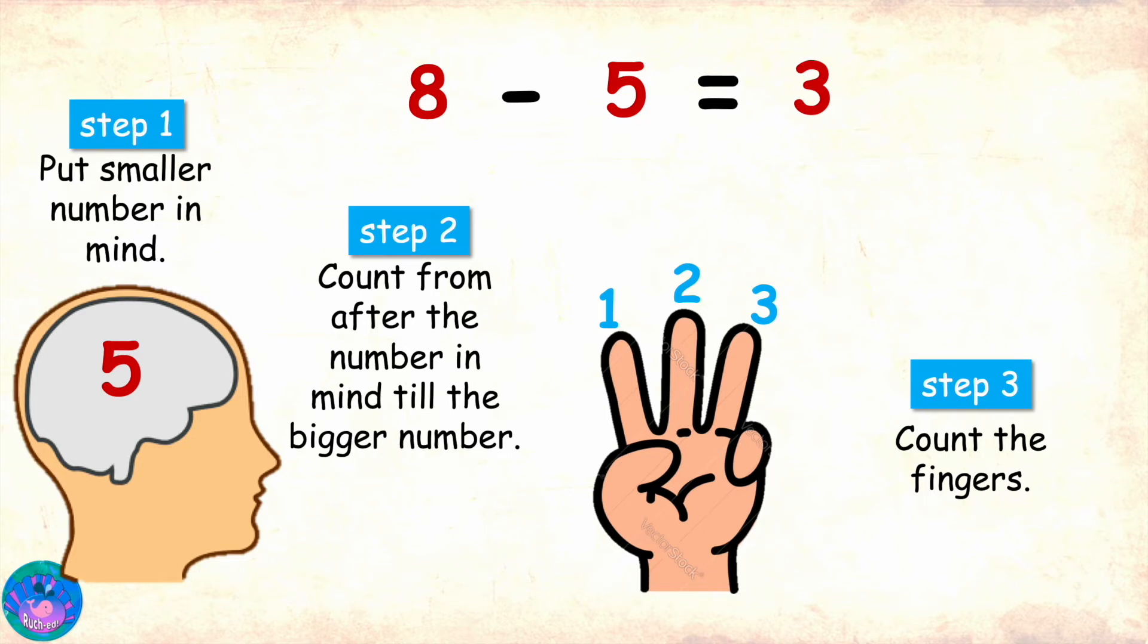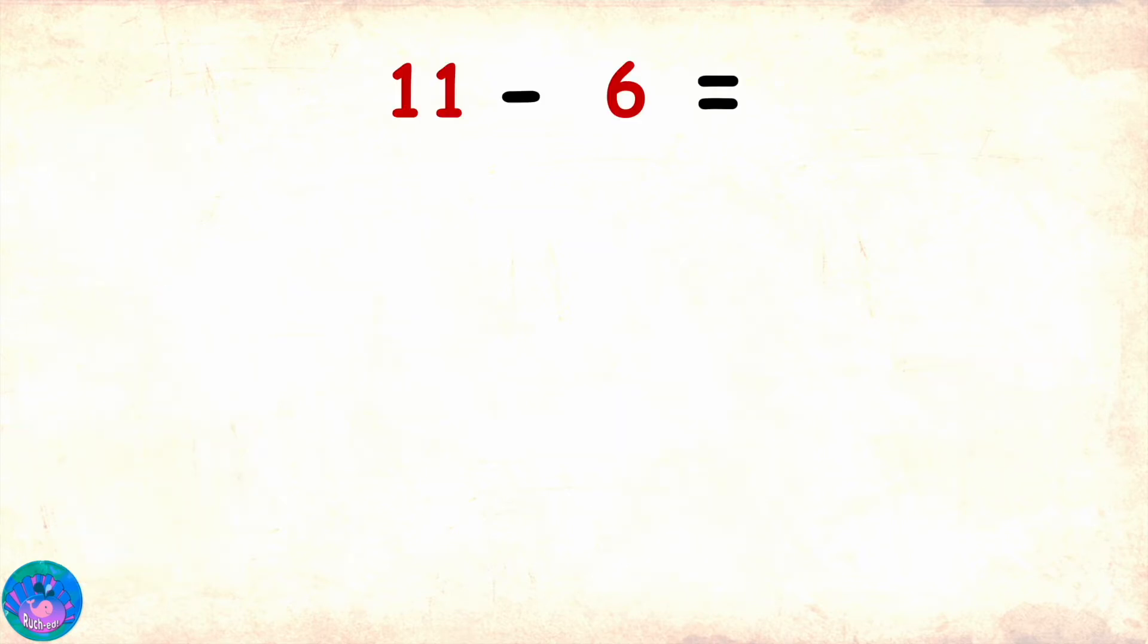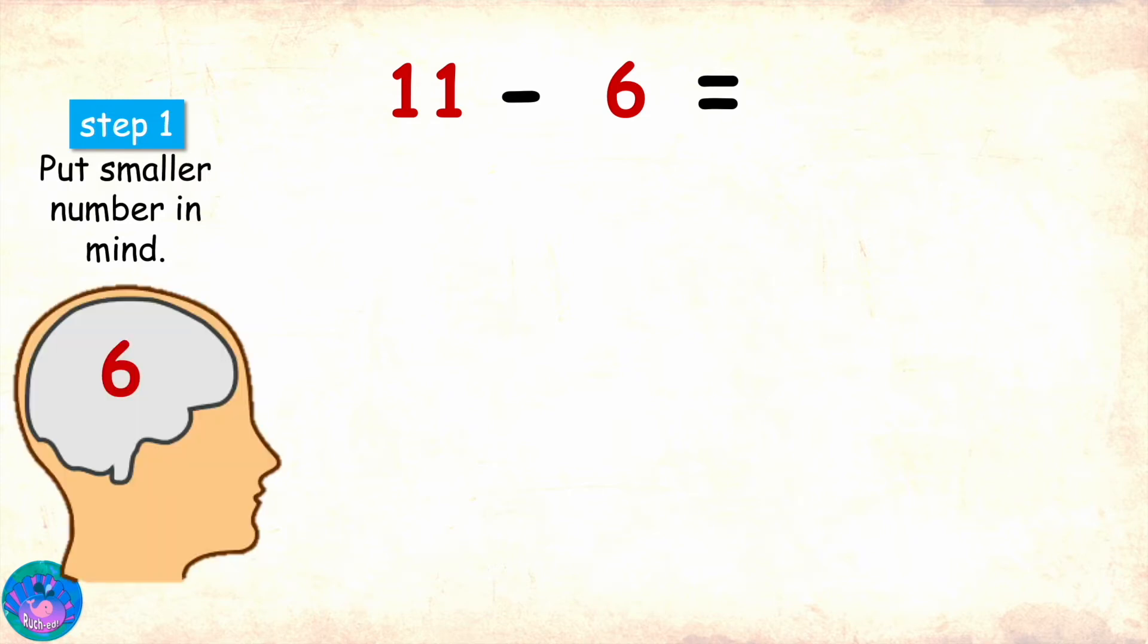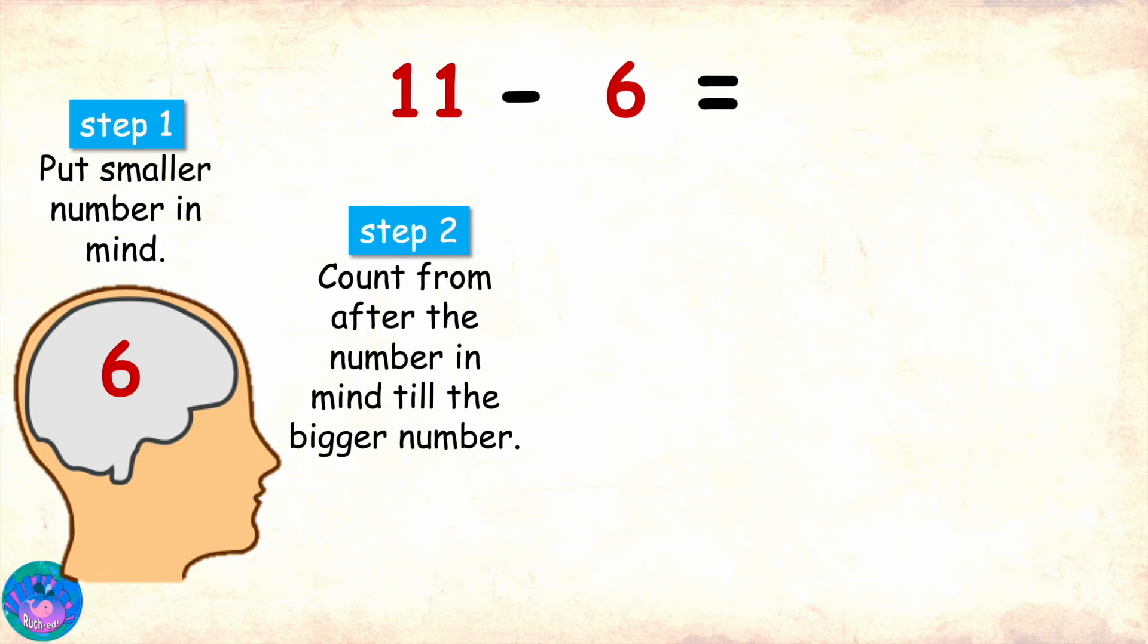Of course, try this one: 11 minus 6. Okay, step 1 is put the smaller number in mind. The smaller number here is 6, so I will put 6 in my mind. Step 2 is to start counting from after the number in mind till the bigger number.